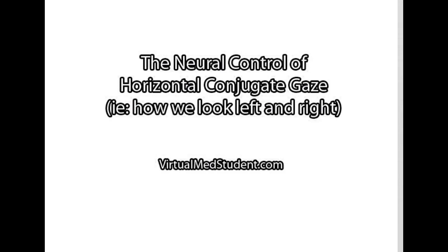In this video we are going to talk about the neural control of horizontal conjugate gaze. And what exactly does that mean? It basically just means how does the brain control the way that we look to the left and to the right.